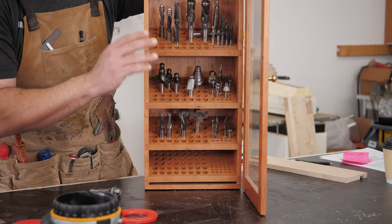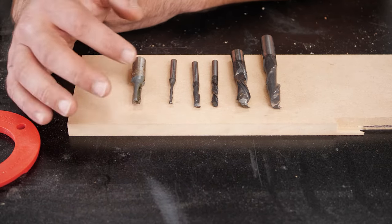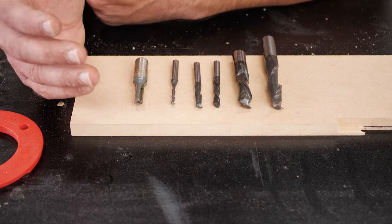The first ones I want to talk about are straight bits. Straight bits come in a variety of diameters. You can get them all the way down to 1/16th of an inch up to, I believe, inch and a half, something like that.